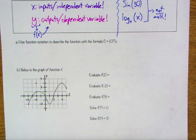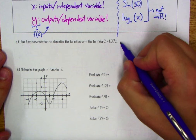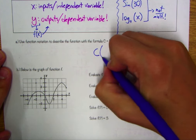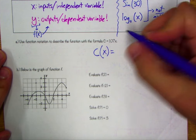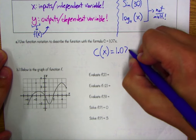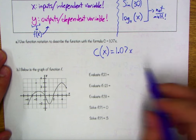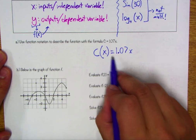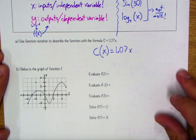Use function notation to describe the function with the formula C equals 1.07X. I'm perfectly fine with you calling this f of x equals 1.07X, or since C is relevant, C of x equals 1.07X. It will always show your input — that independent variable — inside those parentheses.